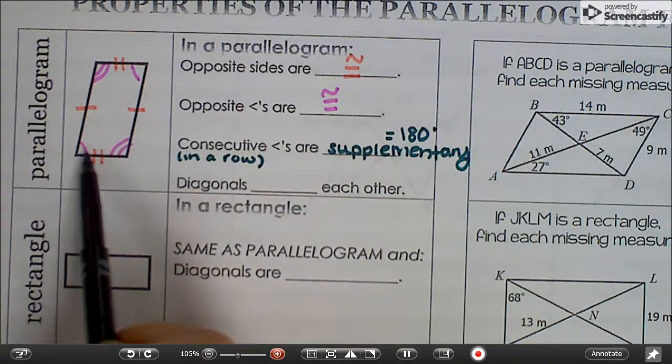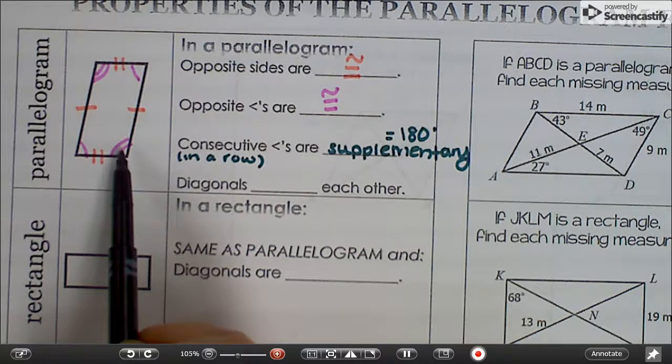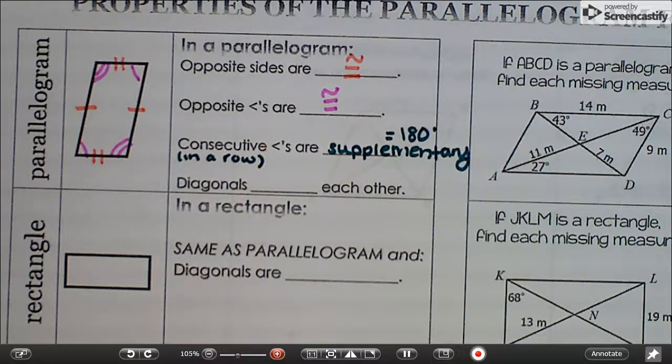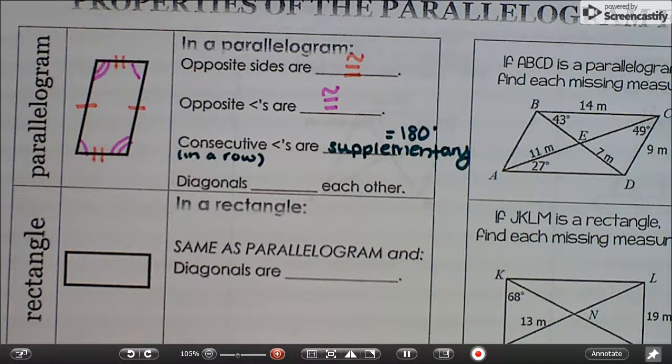So any two consecutive angles, these two, these two, these two, and those two, all will add up to 180 each pair. And lastly, we have diagonals.